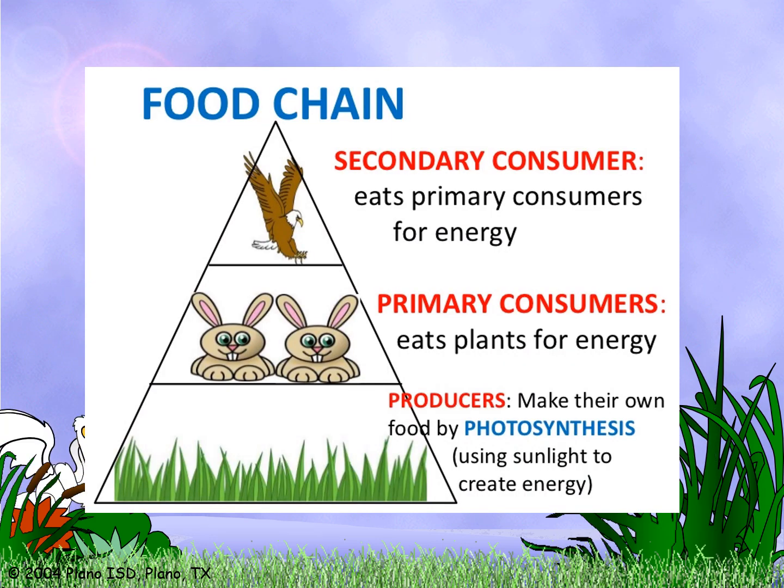In a food chain, starting from the bottom: producers make their own food by photosynthesis using sunlight to create energy. A rabbit eats plants for energy, serving as a primary consumer. The secondary consumer eats primary consumers for energy. The primary consumer gets more energy than the secondary consumer.